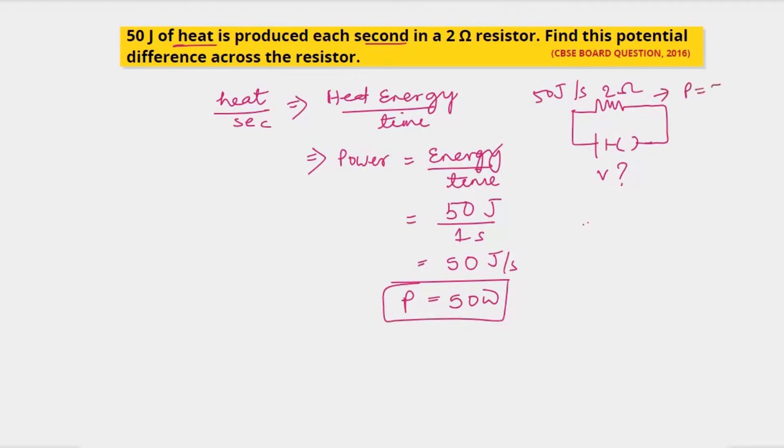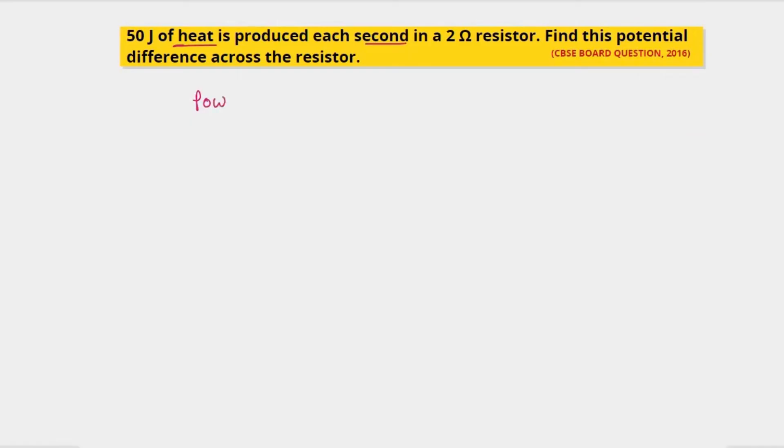Now we will find out what is the potential difference across this resistor. We know power P is equal to V times I, and I is equal to V divided by R. So power is V squared by R. Using this formula we'll solve this question.